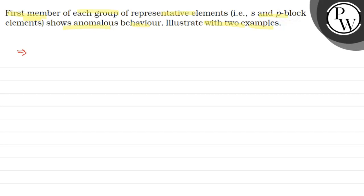Basically, we're discussing anomalous properties of second period elements. What happens in the second period elements? First member of each group of representative elements—we're talking about second period elements here.